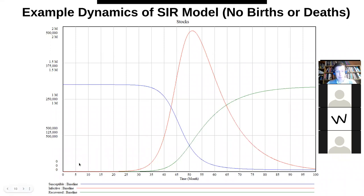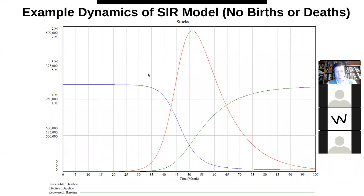Because these can be at very different magnitudes, they are shown on two different scales. The susceptible and recovered are shown on a scale going from zero to 2 million. The population starts at about 1.2 million — they start all susceptible — and by the end of the timeframe, almost all of them are recovered. By contrast, the red curve for infectives is on a scale from zero to 500,000. This is time in months, so one unit means one month.